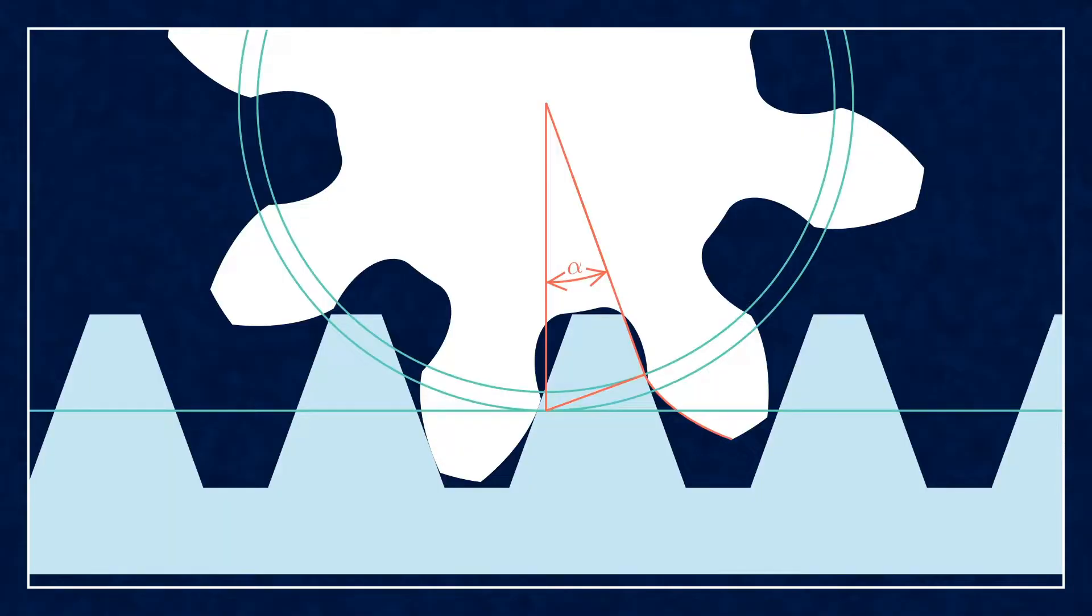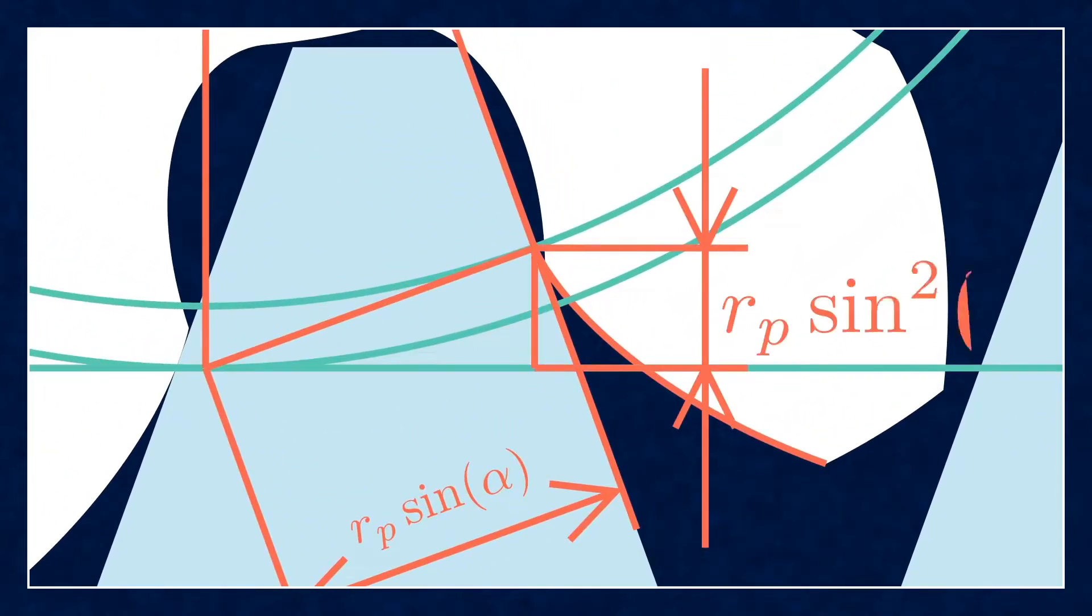There is a right-angled triangle here, the hypotenuse being the pitch radius. The first side equals to the base circle radius, and it's rp times cosine of alpha. The short side is rp times sine of alpha. The height of the base point of the involute curve here is rp times sine alpha squared. This will be important for our calculations later.